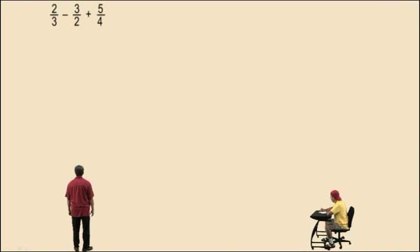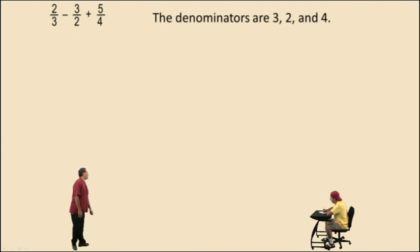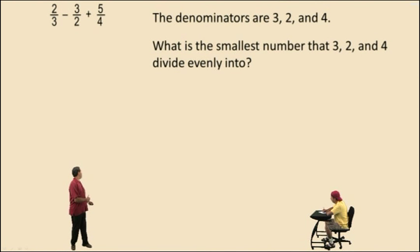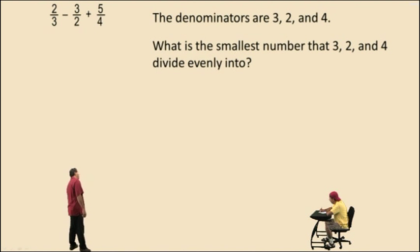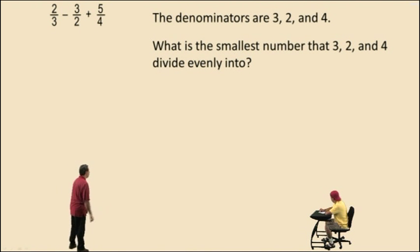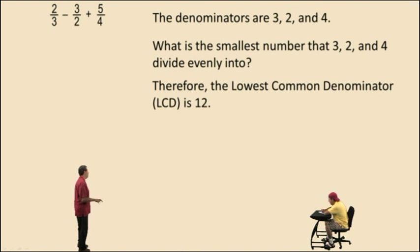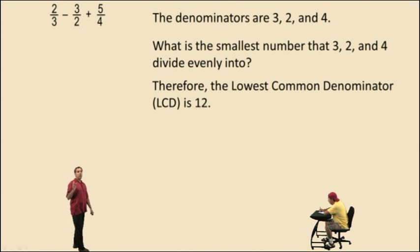Now let's try another one: 2 thirds subtract 3 halves plus 5 fourths. Here, the denominators are 3, 2, and 4. What is the smallest number that 3, 2, and 4 divide evenly into? Remember, start with the largest denominator, 4. Do the other two denominators divide evenly into 4? No, they don't. So try a multiple of 4 — try 4 plus 4, which is 8. Now Charlie, does 3, 2, and 4 divide evenly into 8? No. So try 4 plus 4 plus 4, which is 12. Does 12 work? Yes, all those numbers divide evenly into 12.